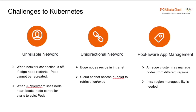However, Kubernetes is designed to work inside the data center. If using native Kubernetes at the edge, we face many challenges. First, the unreliable network between the control plane and the worker node — when the network connection is off and the edge node restarts, pods cannot be created, and when the API server misses node heartbeats, the node controller starts to evacuate the pods. Second, unidirectional network issues because edge nodes reside in an intranet. And lastly, the requirement for edge-native application management.